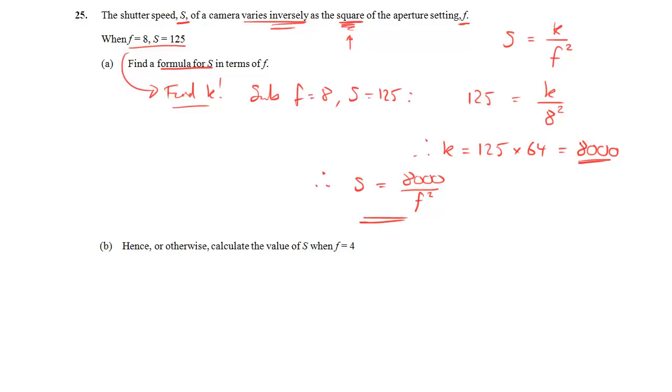Part b, hence or otherwise, calculate the value of s when f equals 4. So we need to put the value of f equals 4 into the formula that we've just come up with. So s is 8,000 divided by 4 squared. 8,000 divided by 16. And this comes to 500.